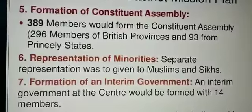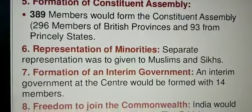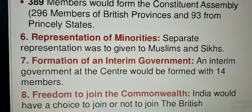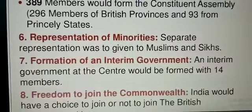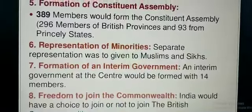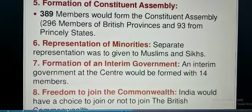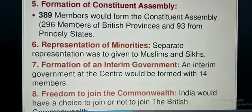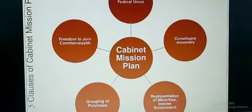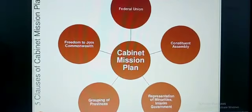Representation of minorities: separate representation was to be given to Muslims and Sikhs. Formation of interim government: an interim government at the center would be formed with 14 members. Freedom to join the Commonwealth: India would have a choice to join or not join the British Commonwealth. These are the clauses of the Cabinet Mission.